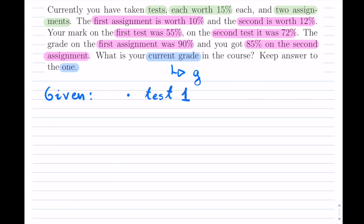So we have two tests that they gave us grades for. So test one, we know that's worth 15%, and we didn't do too well on that first test, so that was 55%.